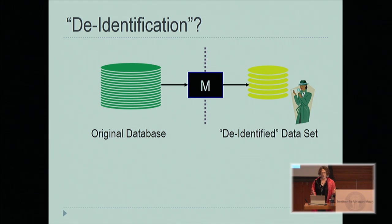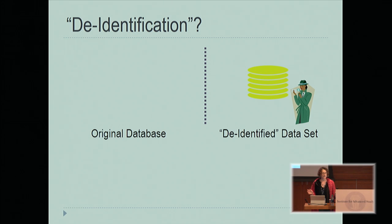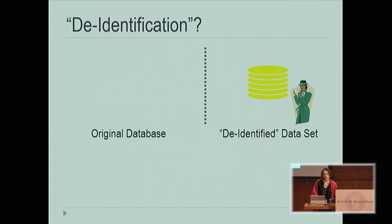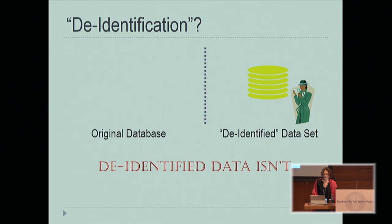One thing that many people think of is just de-identify the data. You start with some original database, pass it through some mechanism or machine M, maybe delete some outliers and some fields, and release a de-identified data set. You say to the data analyst, have at it — find anything you want, just look at this de-identified data. But the only thing we're going to say about that is that de-identified data isn't — either it isn't data or it isn't de-identified. So we're just not going there, and I can point you to many places to back up this statement.